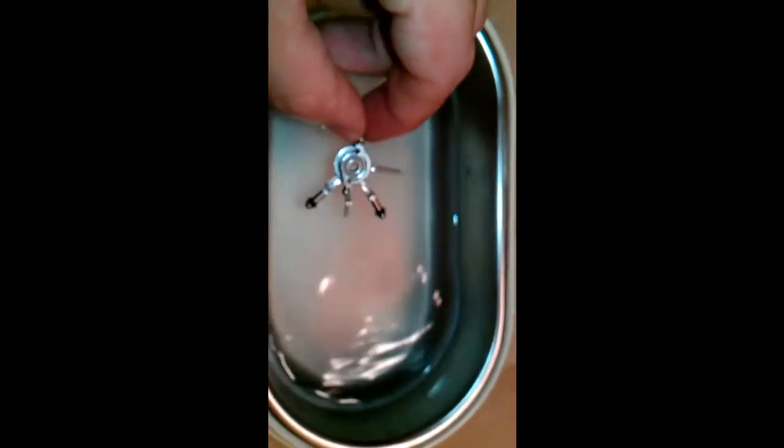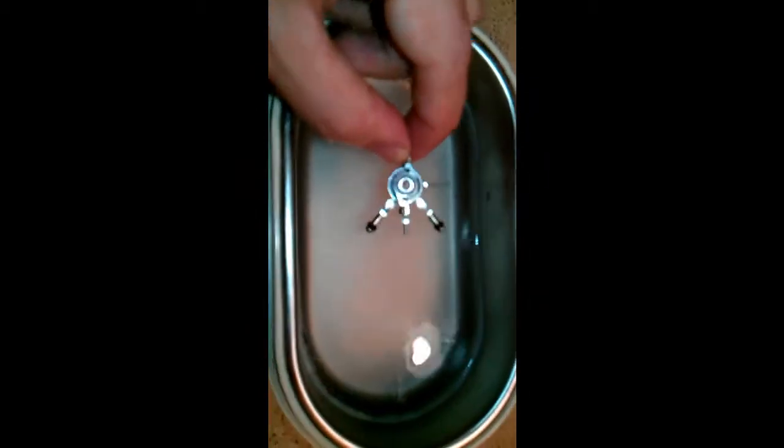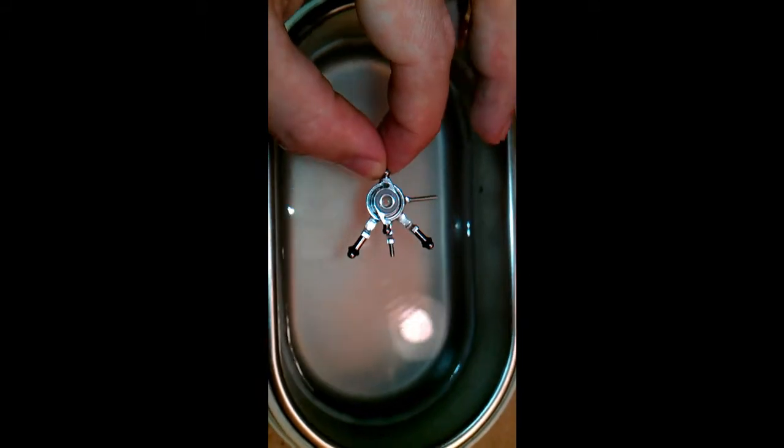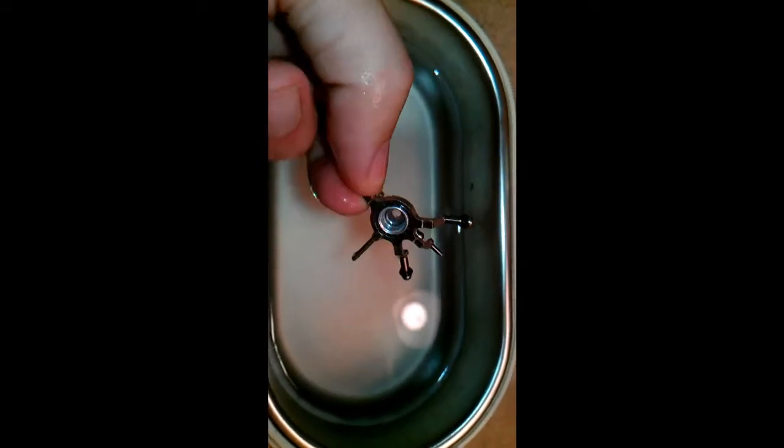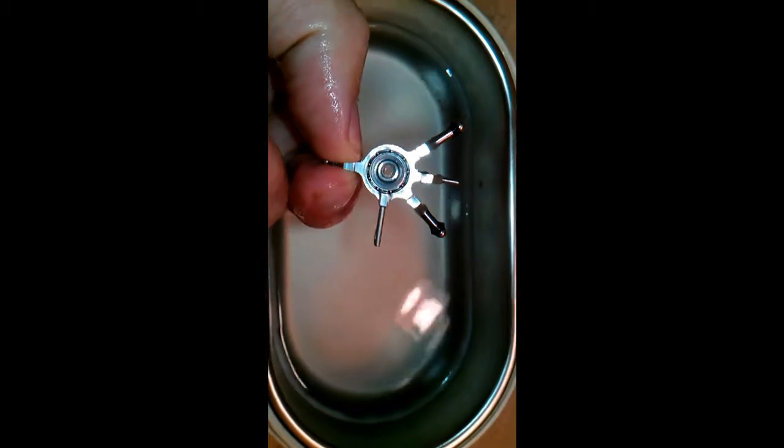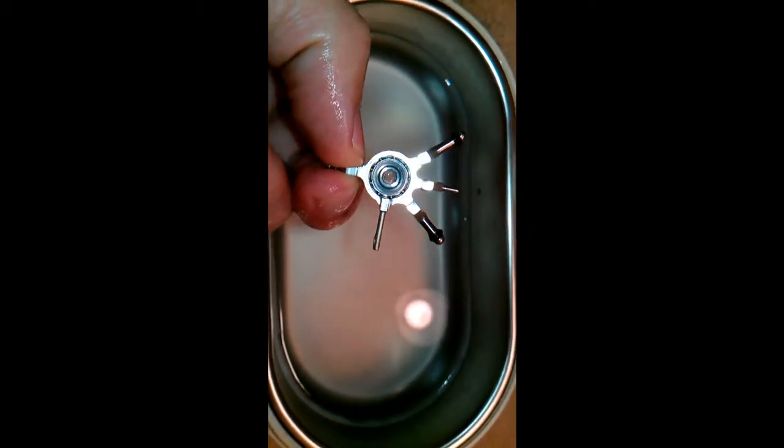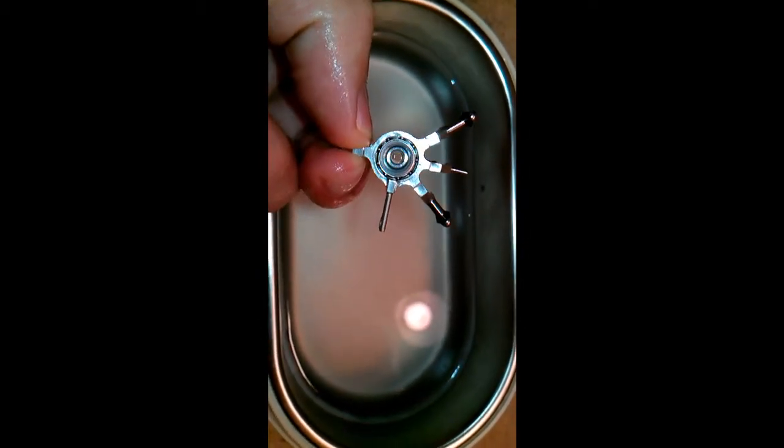So after about 2 to 3 minutes of being in the ultrasonic cleaner, you can now see how clean this is. All that grease and grime, all the used oil is gone. Any lubricant, any dirt is completely out of the bearing assembly.